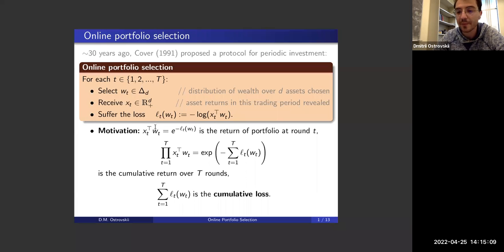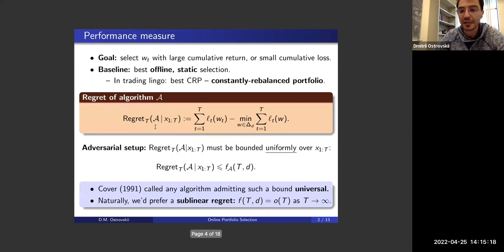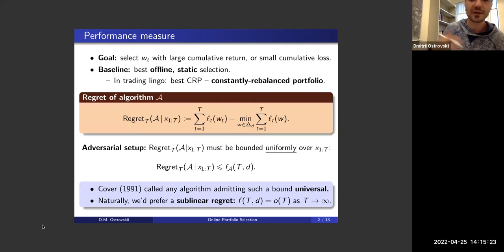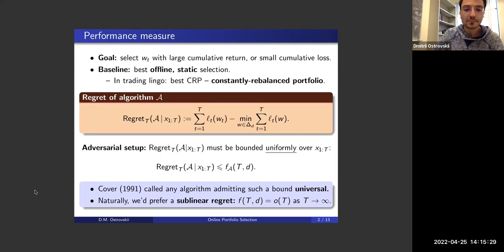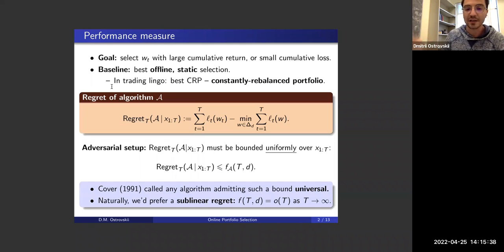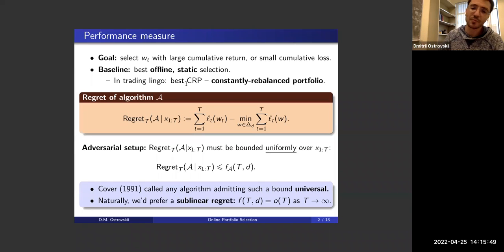Yet somehow you manage to be competitive with this adversarial market — which will seem like a miracle for people not familiar with online learning. Let's state what is really the target of the algorithm: the performance measure. An algorithm is simply the rule for choosing the next w_t given the previous history up to t-1.